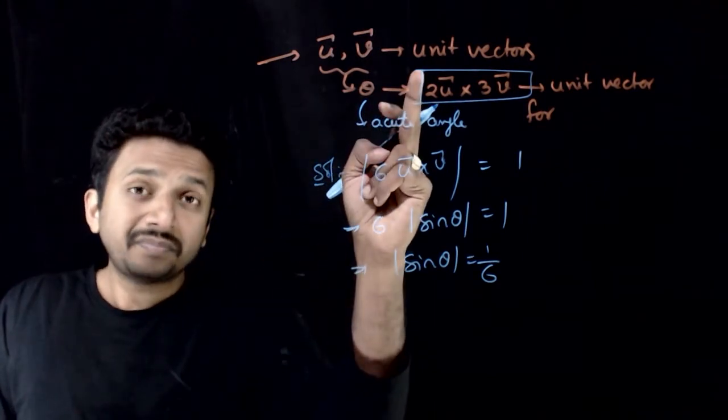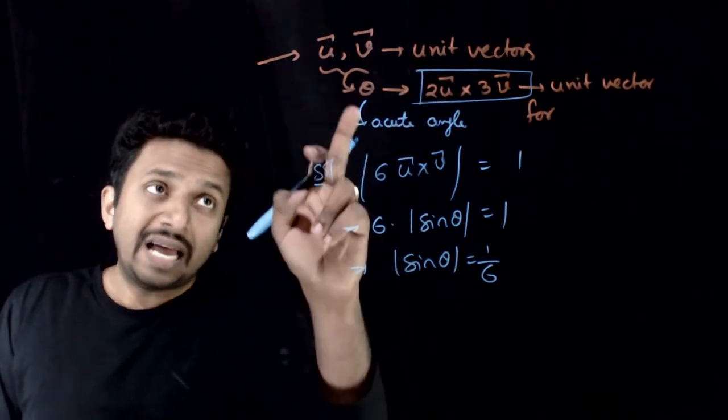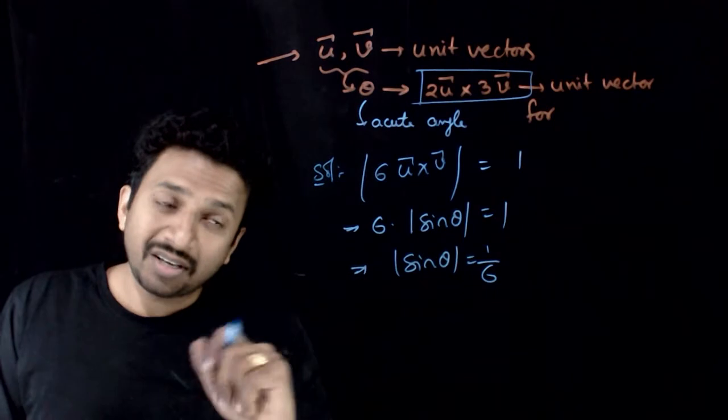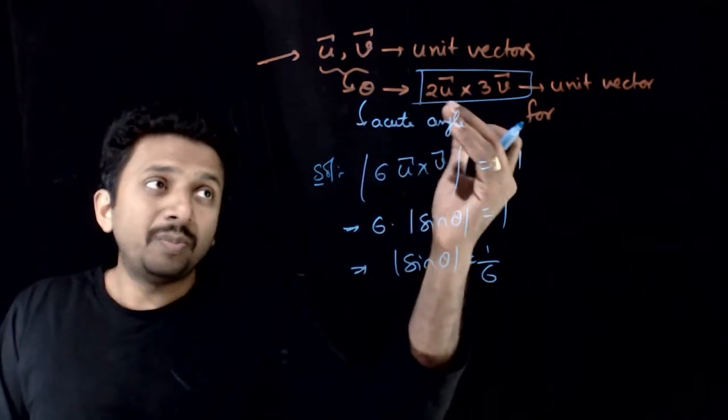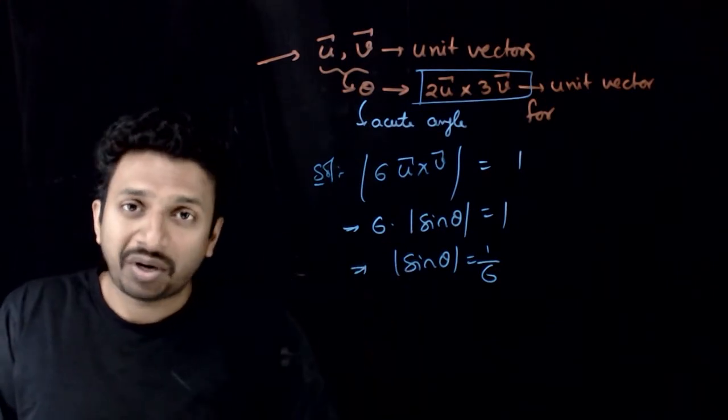So if u and v are unit vectors and if the angle between them is such that mod sin theta is equal to 1 by 6, then 2 u bar cross 3 v bar will also be a unit vector.